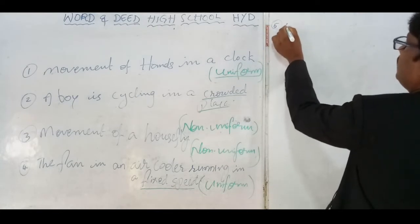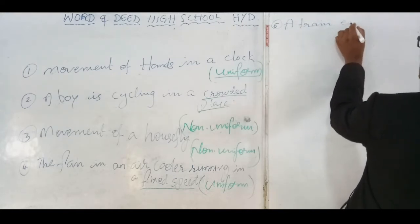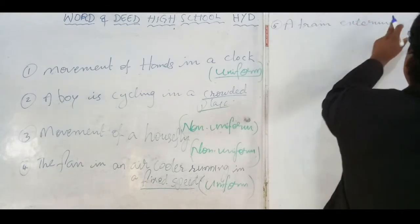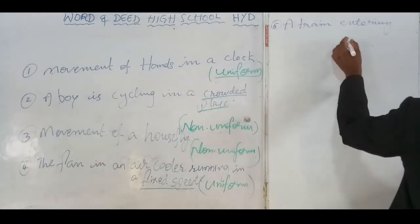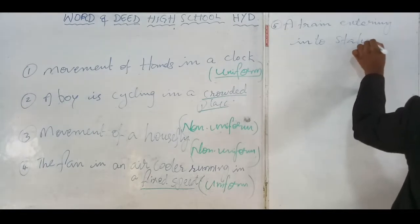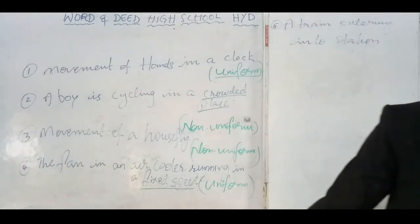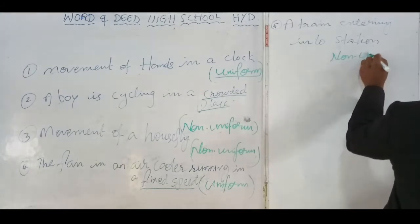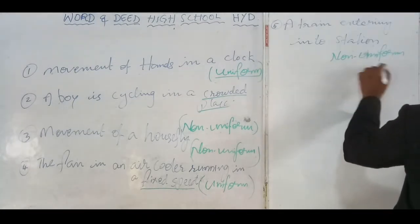Next, if you take a train — a train which is entering into a station — what sort of movement does that consist of? That is in non-uniform motion, because the train is slowing down as it approaches the station.